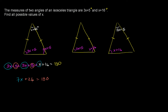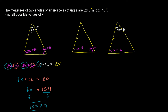Adding up: 3x plus 3x plus x gives 7x, and 5 plus 5 plus 16 gives 26. So 7x plus 26 equals 180. Subtracting 26 from both sides: 7x equals 154. Dividing both sides by 7, we get x equals 22 in this first scenario.